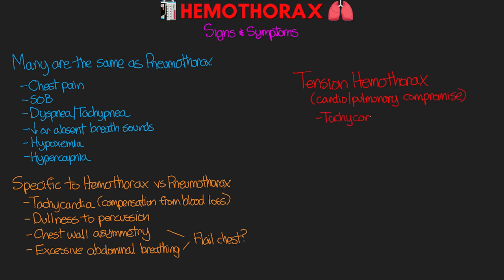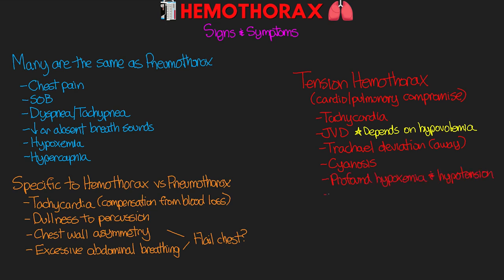In tension hemothorax you'll again see tachycardia. JVD may or may not be present, depending on the extent of hypovolemia the patient is experiencing from blood loss. They can have tracheal deviation away from the affected side, cyanosis, profound hypoxemia, hypotension, respiratory failure, and potentially cardiac arrest.